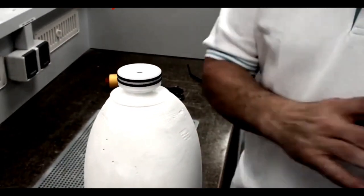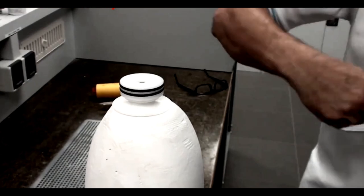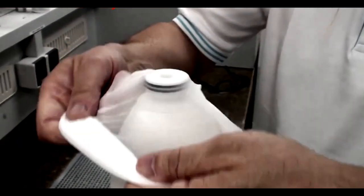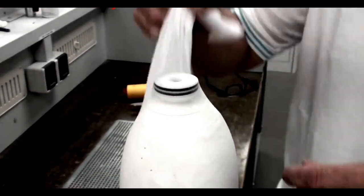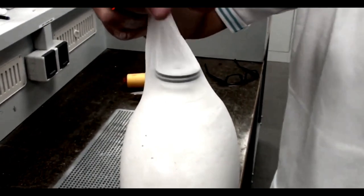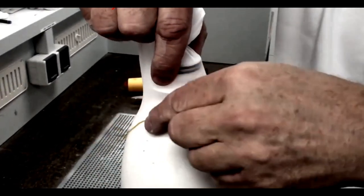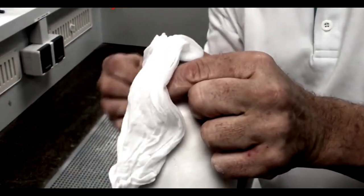At this point take nylon stockinette and put it over the top of the positive model and the lamination dummy. And take a small thread and tie off the nylon stockinette underneath the lamination dummy and around the screw.